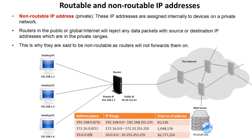As you probably guessed, non-routable addresses are private. These IP addresses are assigned internally to devices on a private network. If you look up the IP address of your phone, your router, or your PC at home, you'll probably find it has a 192.168 address, because there are special reserved ranges for non-routable private addresses, and one range starts with 192.168.